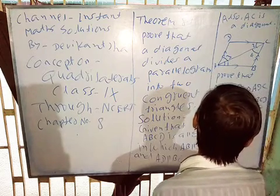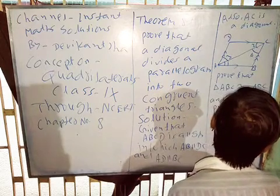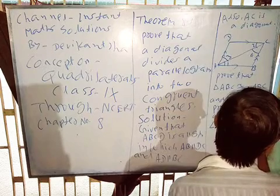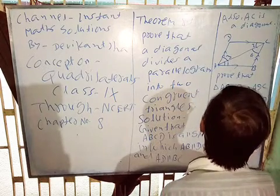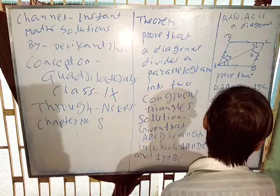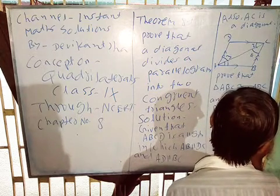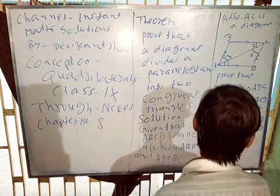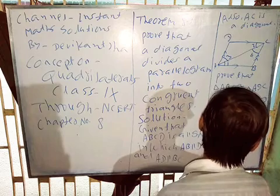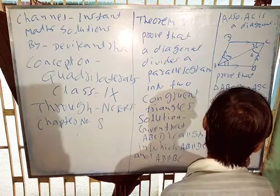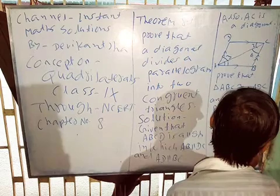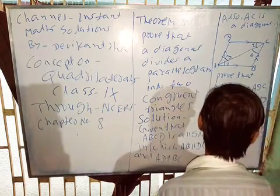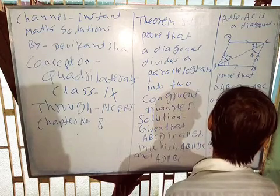Proof: Angle 1 is equal to angle 2 by alternate interior angles. AC is common, AC equals AC.